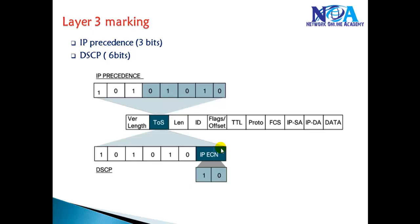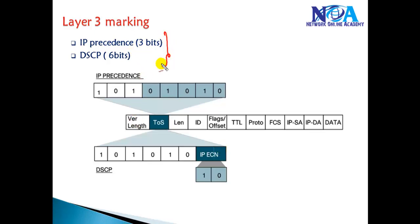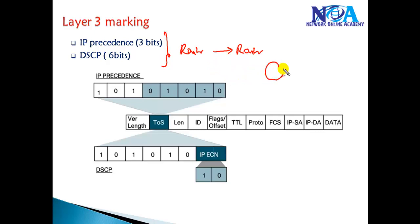Next we have Layer 3 marking, which has two different categories. Layer 3 marking is performed from router to router based on Layer 3 information. The router is also responsible for converting a Layer 2 marking into an equivalent Layer 3 marking as traffic crosses the routed network — for example, converting a CoS value received on a LAN interface into a Layer 3 marking.